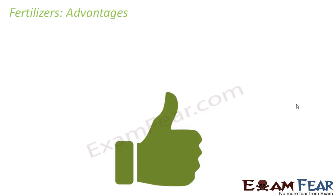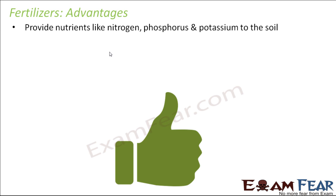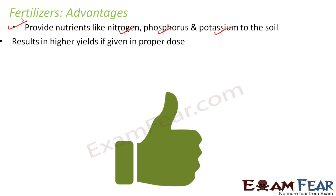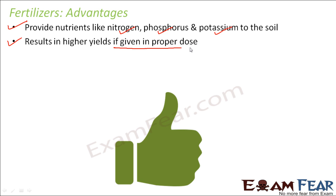Some advantages of fertilizers are that they provide nutrients like nitrogen, phosphorus, and potassium to the soil in high content, so a large amount of nutrients are provided. It results in higher yields if given in the proper dose — this is very important. Proper dose will give higher yield, so all advantages apply in proper dose. But as soon as you start applying fertilizers in excess, it is not going to be useful to you and it can have many adverse effects.